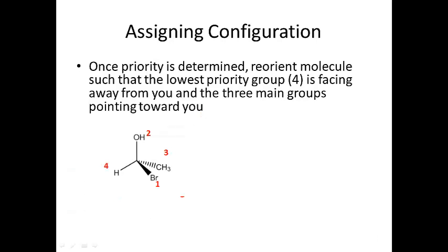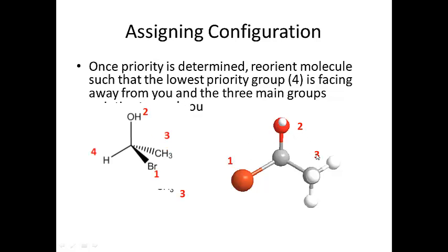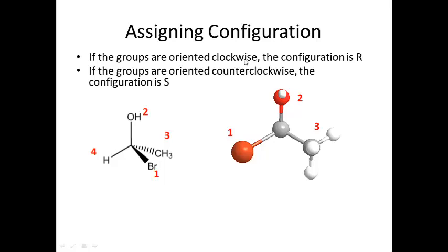Let's go back to the PowerPoint. Here is molecule B. The priority has already been determined. Now molecule B is in the steering wheel configuration with hydrogen, the number four group, facing back and the top three groups pointed out at me. If you look here, this is one, this is two, this is three. If the groups are oriented clockwise, the configuration is R. If they're oriented counterclockwise, the configuration is S. R and S are Latin terms - R meaning rectus or right hand, and S meaning sinister or left hand.